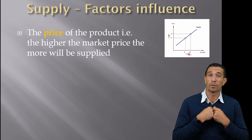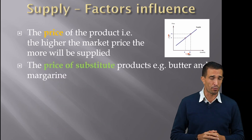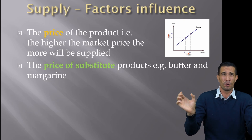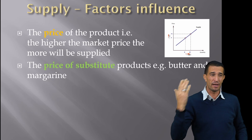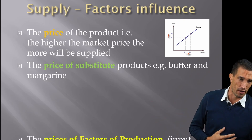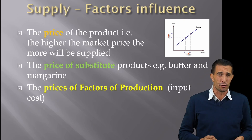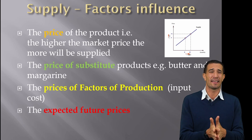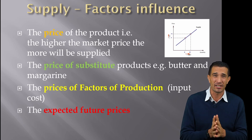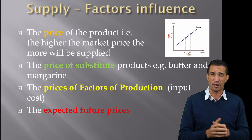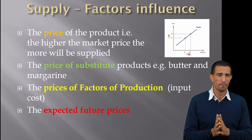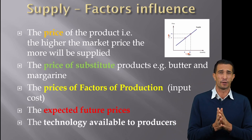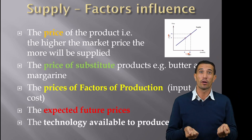Factors influencing supply include: the price of the product — a higher market price means I'll supply more; substitute products — for example, butter versus margarine used for the same purpose, where the price of one affects supply of the other; the price of factors of production — if input costs are too high, profit decreases and supply falls; expected future prices — in South Africa, forecasts of high inflation on flour and cooking oil are influencing current supply decisions; and technology available to producers — cheaper production means more profit and more supply.